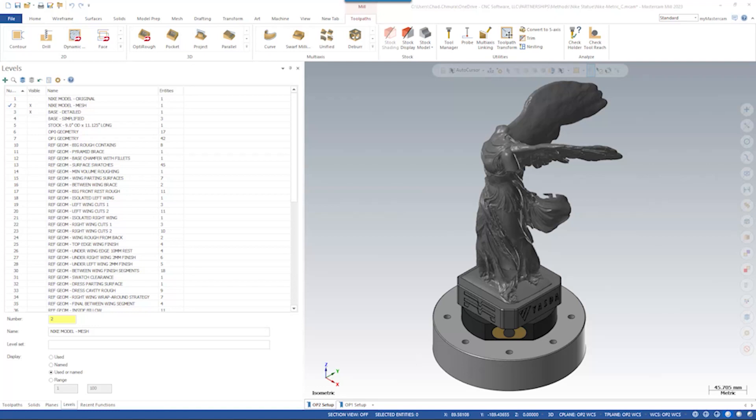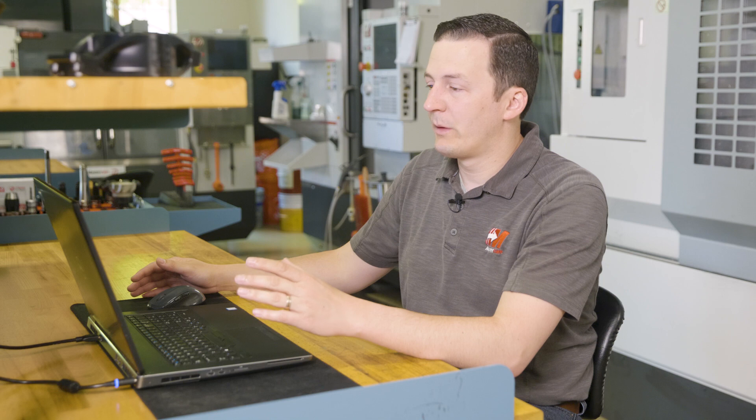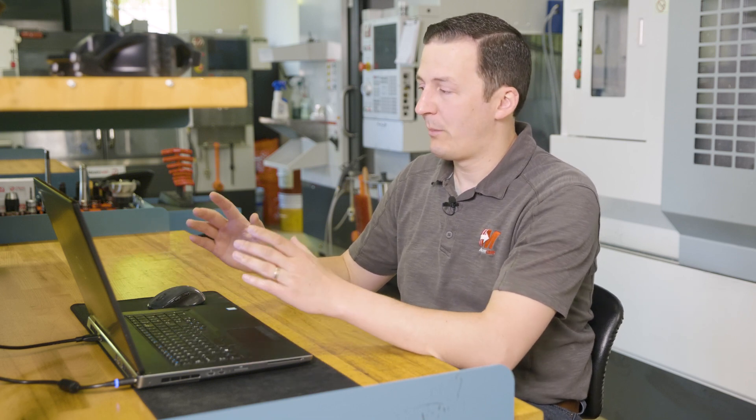In Mastercam, I used a 1 micron tolerance for all the finished toolpaths with a 1 thousandth of an inch step over. This Mastercam file is an absolute monster, and in the following series of videos, I want to show you some of the really cool Mastercam tools that we used to make this part. These Mastercam tools are the same exact tools you have access to, so we want to show you that a part of this caliber is something that you could accomplish as well.